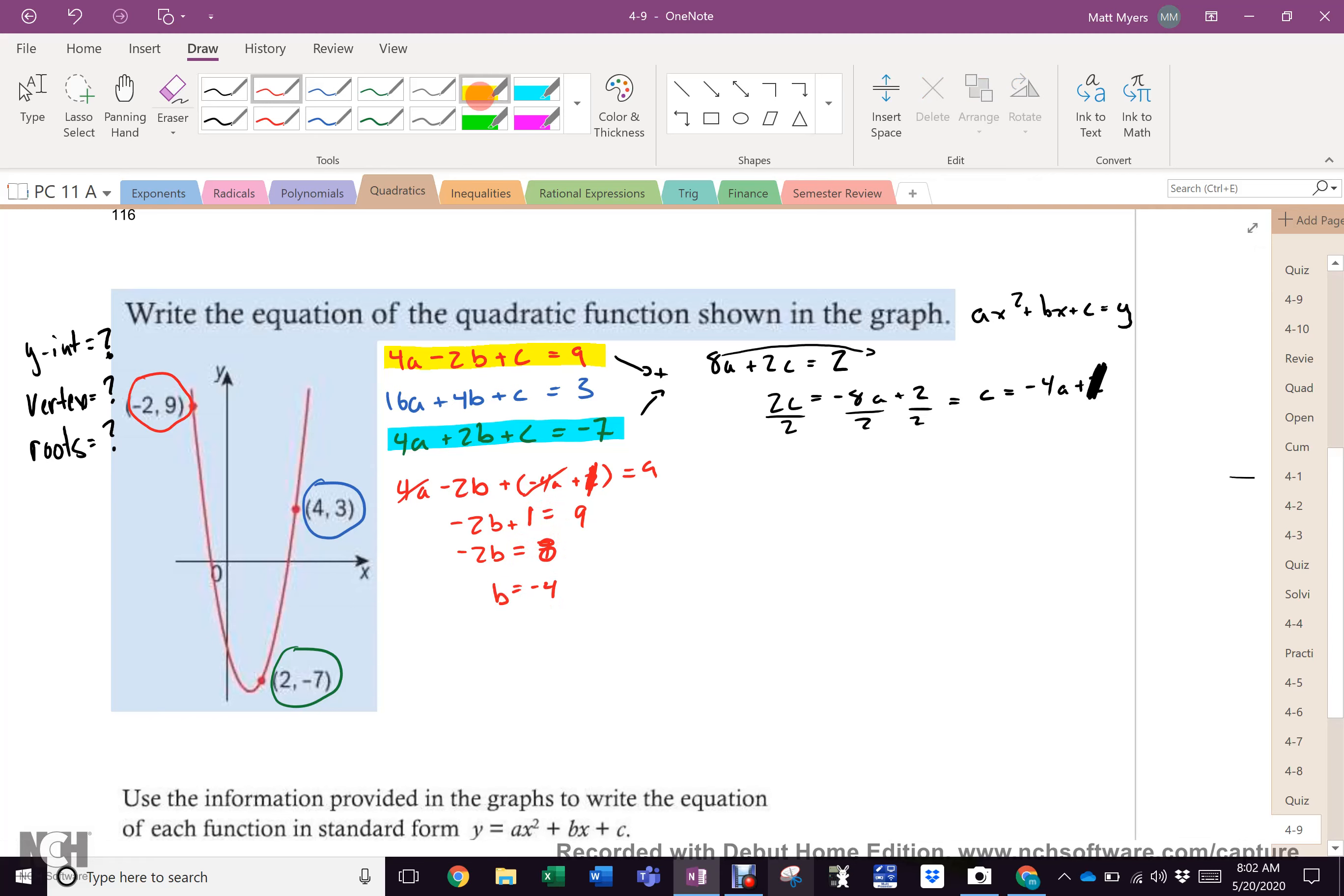For example, I'm going to use this green one right here. So, 16a + 4b(-4) + (-4a + 1), because that's c, equals 3. So, that's 16a - 16 - 4a + 1 equals 3. 12a - 15 equals 3. And then, 12a equals 18. And, a equals 1.5. Well, again, sorry. 18 over 12, which is about 1 and a half, or 1.5.